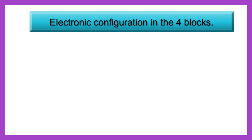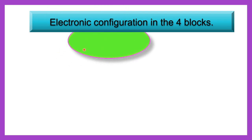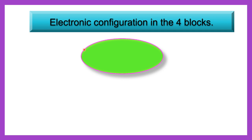Now see the electronic configuration in the 4 blocks. The structure of the modern periodic table shows 4 blocks: S block, P block, D block, and F block. Now let's see the electronic configuration of S block elements.